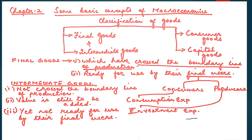What are final goods? Final goods are those goods which have crossed the boundary line of production, and they are ready for use by the final users. Now there are two things to be noted: what is meant by crossing the boundary line of production, and who are the final users? The final users are the consumers and the producers.